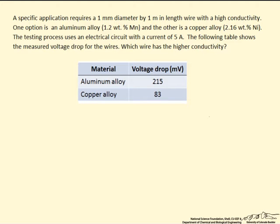The testing process here uses an electrical circuit with a current of 5 amps, and the following table shows the measured voltage drop for the wires. Given this information, we want to know which wire has the higher conductivity.